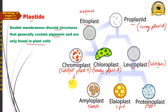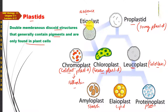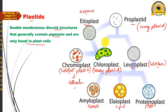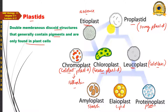Chloroplasts can originate not only directly from proplastids (when light is present) but also from etioplasts. When light is absent, a proplastid converts to an etioplast first; then when light becomes available, the etioplast converts into a chloroplast. This is the origin pathway of chloroplasts from proplastids.